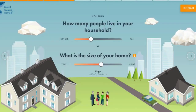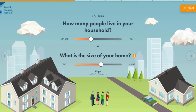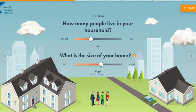The next question asks how many people live in my household, which is a matter of simple division. If there are 10 people in my household, the resources involved in building my house get divided by 10. For each one of us, the resources are effectively a little bit less impactful because we're sharing the impact across a number of people.